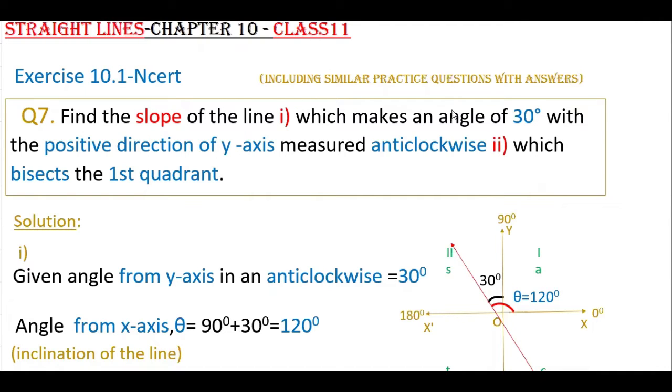Please practice the similar type of questions at the end of the video I have given here. Now going to the problem: find the slope of the line which makes an angle of 30 degrees with the positive direction of y-axis measured anticlockwise.